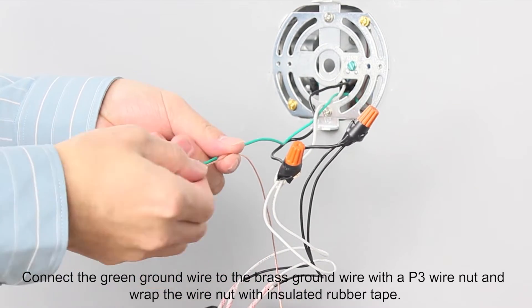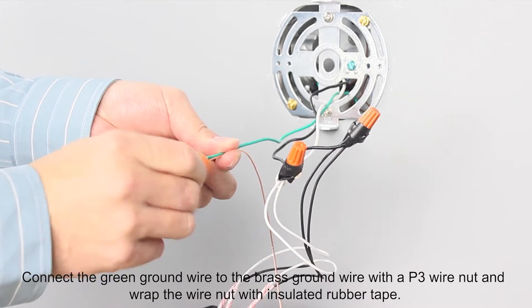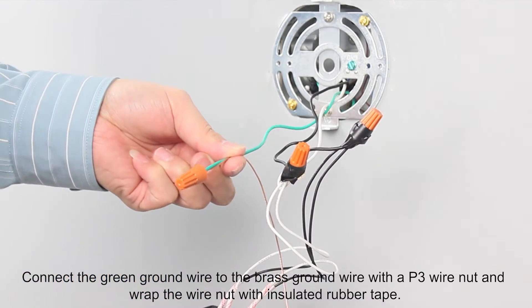Connect the green ground wire to the brass ground wire with a P3 wire nut and wrap the wire nut with insulated rubber tape.